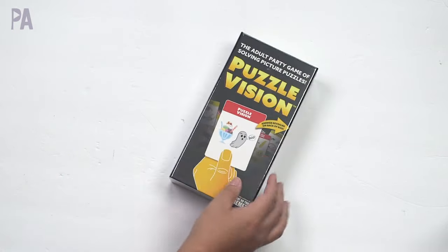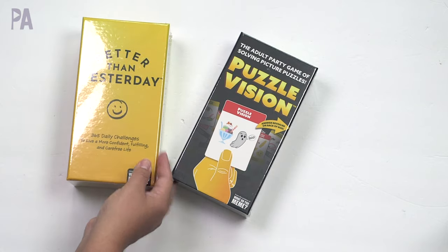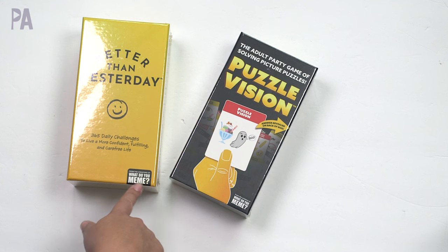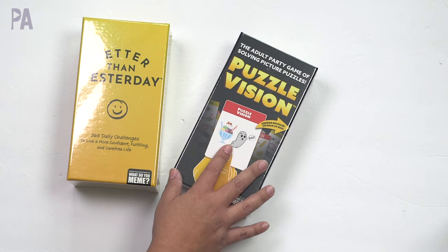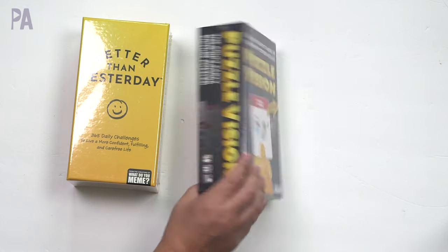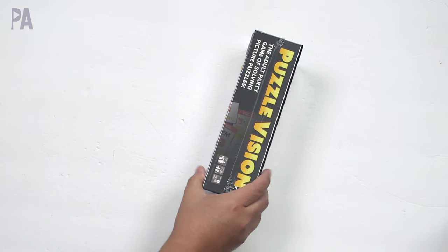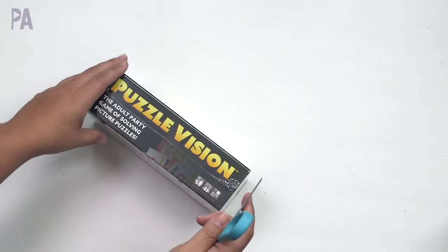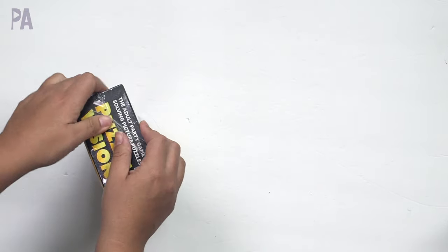There were two different games at Dollar Tree. Now in a past Dollar Tree test, I showed the same brand. It's the brand, What Do You Meme? And they make these little card games. And they had a road trip one and like a question and answer one, I think. And they're all full size name brand games that have ended up in the Dollar Tree for some reason. And there's two more. So this one is Puzzle Vision and this one's better than yesterday. So let's look at Puzzle Vision. These are games that are meant for adults.